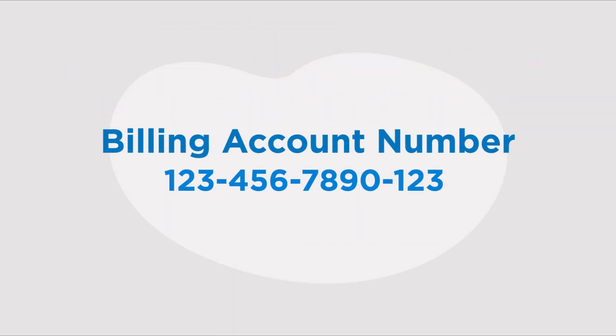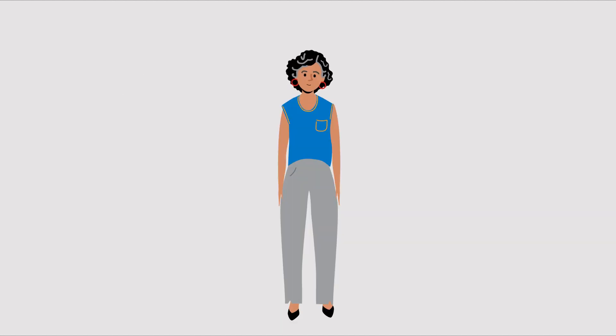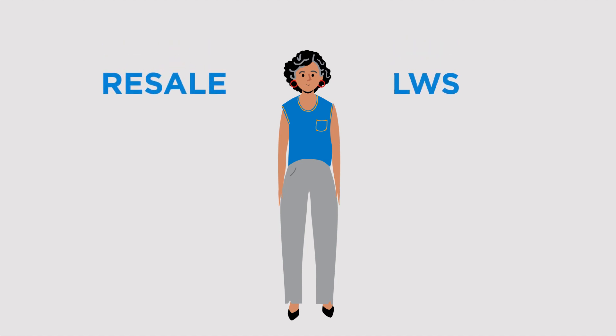Next, you may need to populate the BAN, or billing account number, so be sure to have that handy as well. Finally, you will need to know what service type you are disconnecting — resale or LWS — and whether it is a simple POTS line or something more complex, like Syntrex or ISDN.